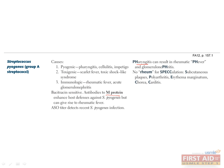S. pyogenes is one of the few bacteria left that remain susceptible to penicillin. Glomerulonephritis is another complication of S. pyogenes infections. It is important for you to know that glomerulonephritis can result from untreated S. pyogenes pharyngitis and/or skin and soft tissue infections.